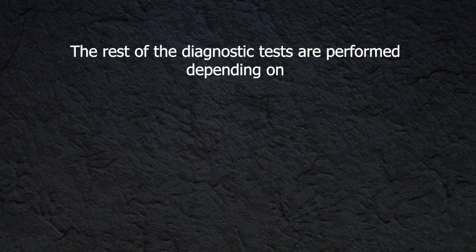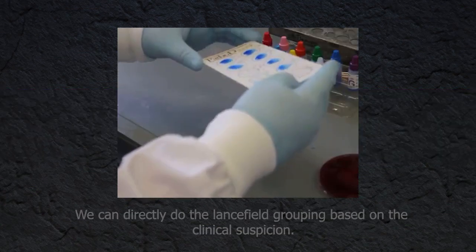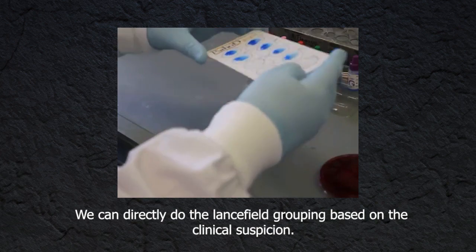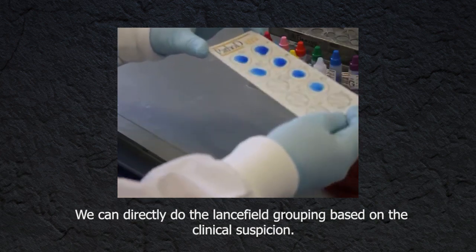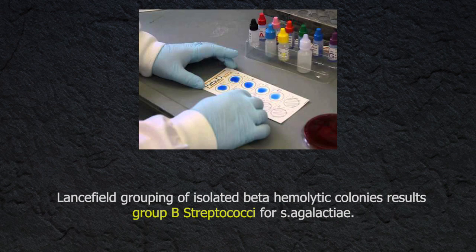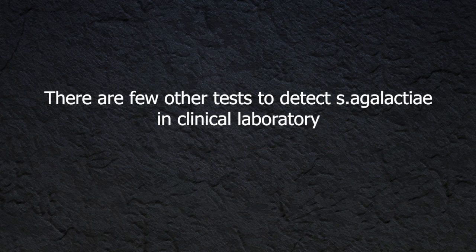The rest of the diagnostic tests are performed depending on laboratory standard operating procedures. We can directly do Lancefield grouping based on clinical suspicion. Lancefield grouping of isolated beta-hemolytic colonies results in identification as Streptococcus agalactiae. There are a few other tests to detect Streptococcus agalactiae in the clinical laboratory.